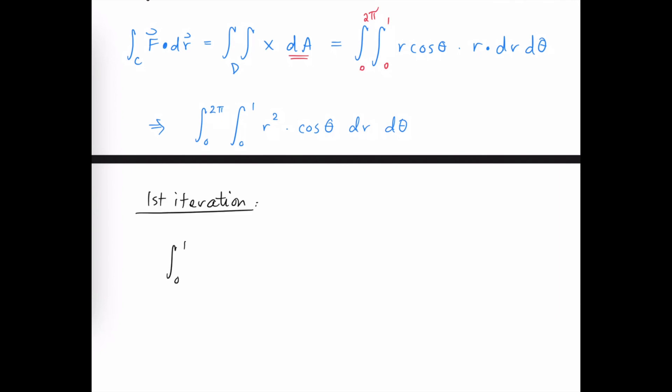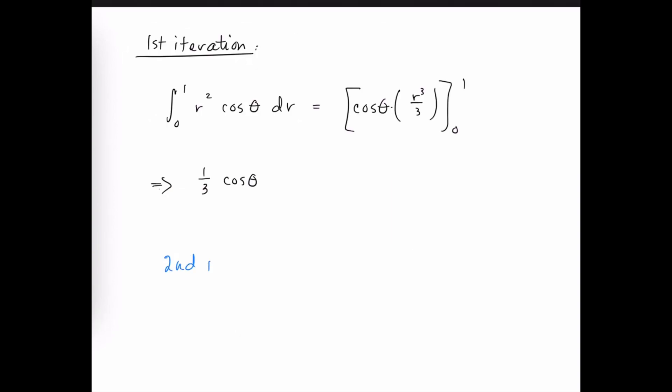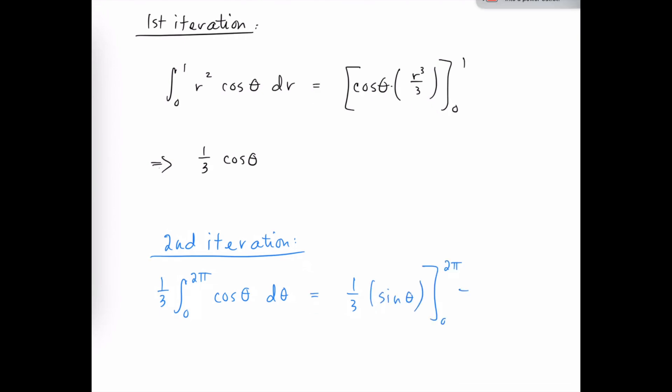The first iteration is going to be the integral from 0 to 1 of r squared cos theta dr. So cos theta is a constant multiple, and the antiderivative of r squared is r cubed over 3. And then when we evaluate this from 0 to 1, we get 1 third cos theta, which then becomes the integrand in our second iteration, which is the integral from 0 to 2 pi. I'll pull the 1 third out to the outside, and our integrand is cos theta evaluated with respect to theta. So we then have 1 third times the antiderivative of cosine is sine. And when we plug in our limits of integration, we end up with the value 0.